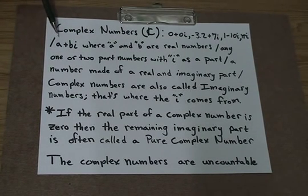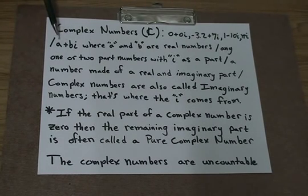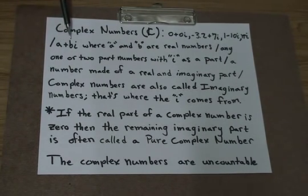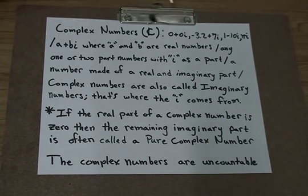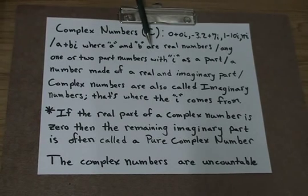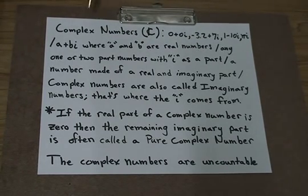The general form for a complex number is a plus bi, where a and b are real numbers. This is often called the real part — the a — and the b is often called the imaginary part. You can help remember this by noting that a complex number is any one or two part number with i as a part, so if it has i in it, it's a complex number.